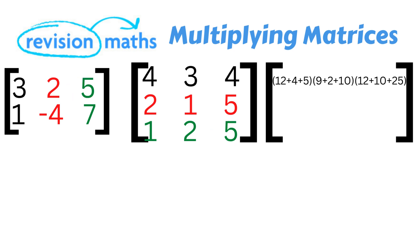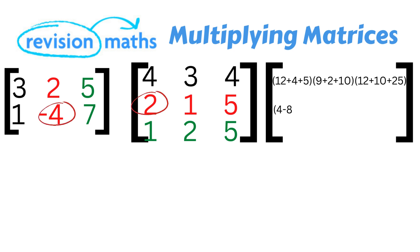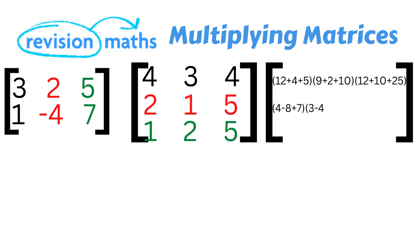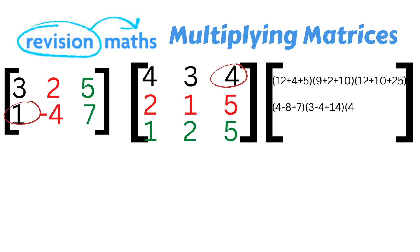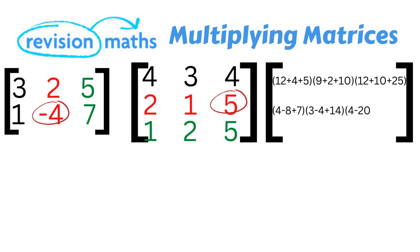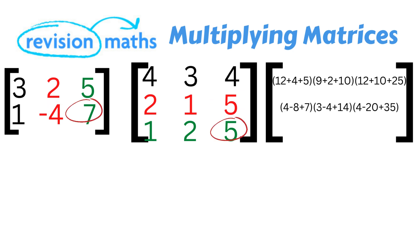Now we move down to the second row of matrix 1. Starting with column 1 of matrix 2: 1 times 4 gives 4, minus 4 times 2 gives minus 8, and 7 times 1 gives 7. Moving to column 2: 1 times 3 is 3, minus 4 times 1 is minus 4, and 7 times 2 is 14. Then column 3: minus 4 times 5 is minus 20, and 7 times 5 is 35. We have now completed multiplying every row in matrix 1 by every column in matrix 2.